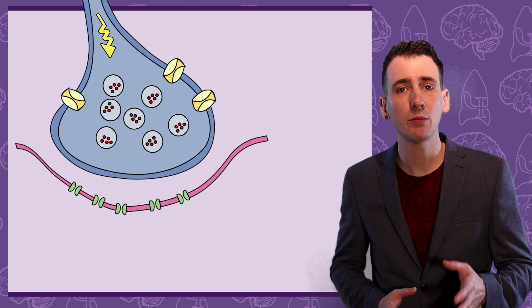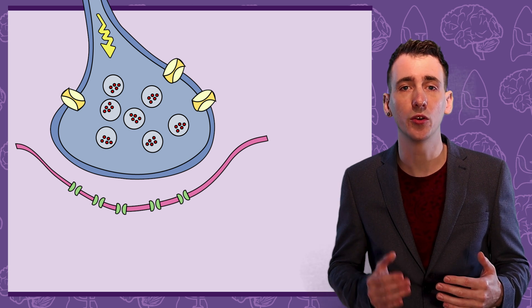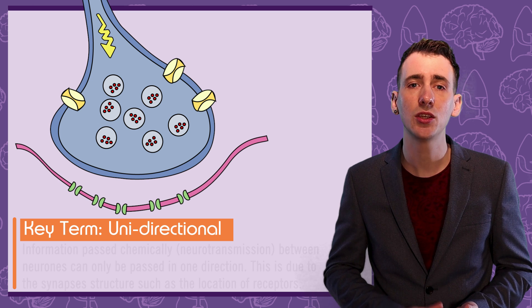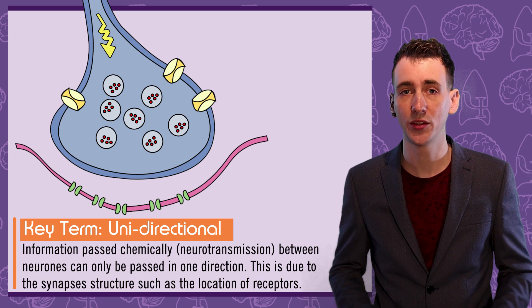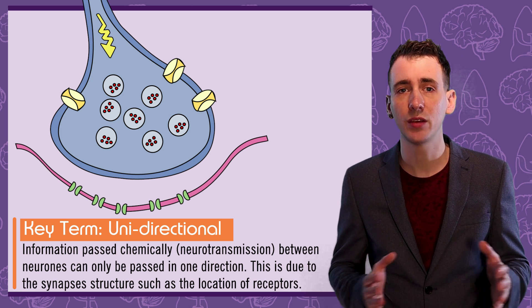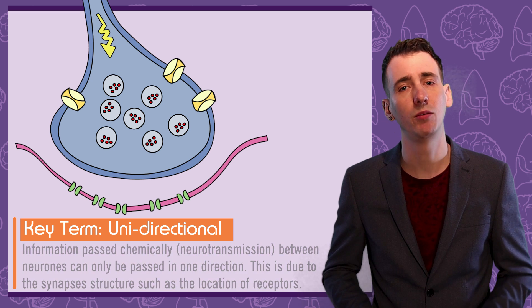Now, as the receptors are on the postsynaptic cell, and the neurotransmitters are stored in the presynaptic cell, the communication is unidirectional, or one-sided. Meaning this process of information signalling can't happen in reverse.